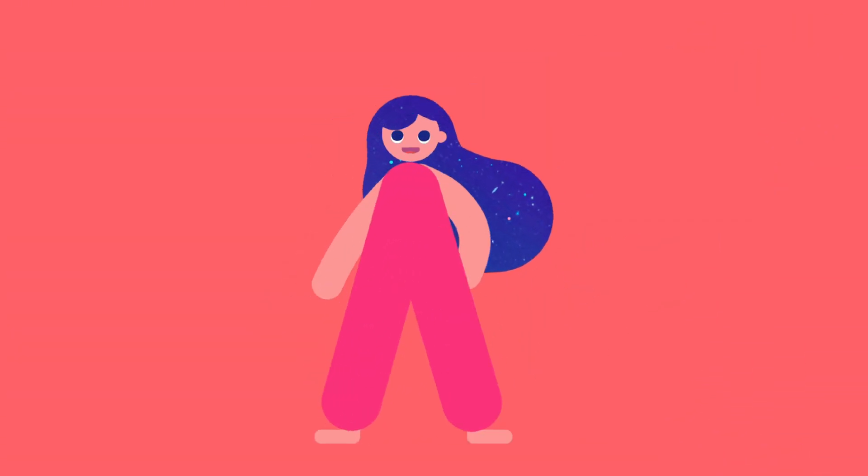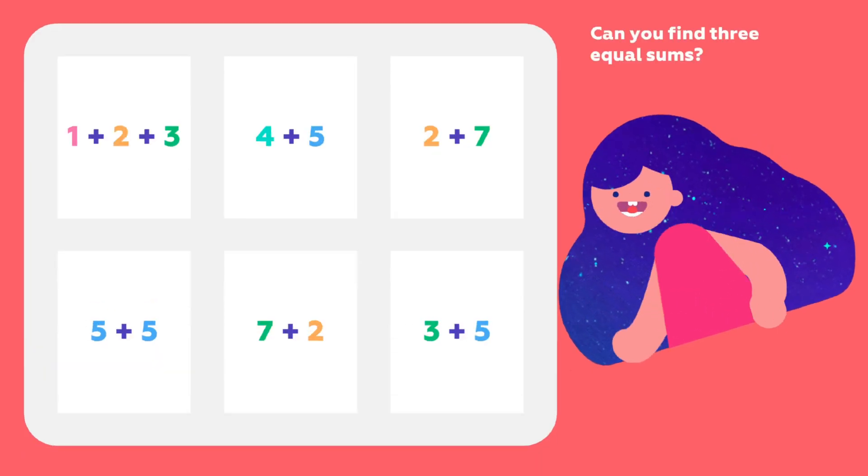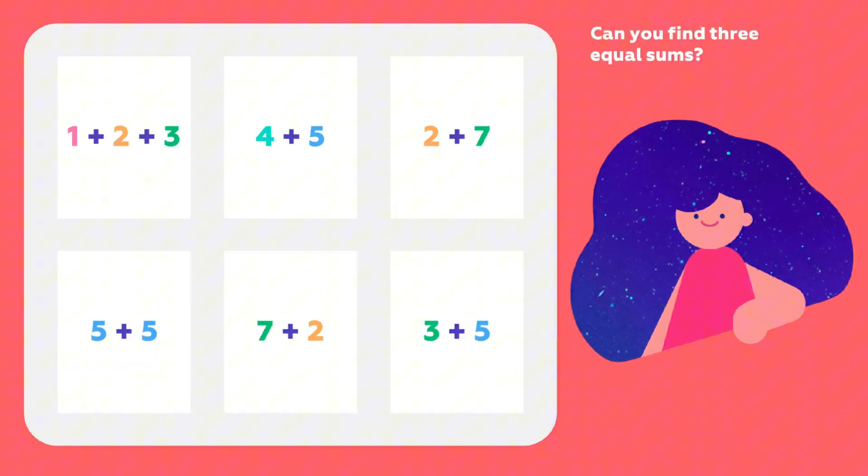Now it's puzzle time. Let's go. Can you find three equal sums? So we know that you can switch the places of addends and the result will still be the same.